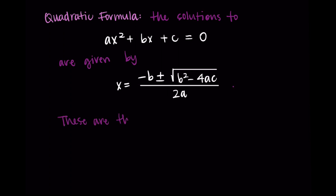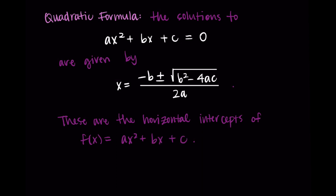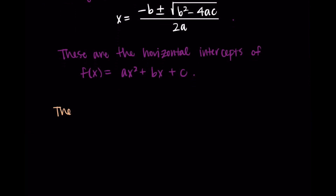When we think about this in terms of a function and its graph, these solutions are actually the horizontal intercepts of our function f of x equals ax squared plus bx plus c. These are the specific input values for x that we input to the function to get an output of zero, which is exactly what a horizontal intercept is.